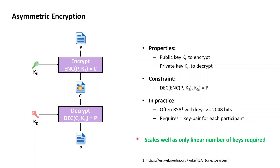The downside to asymmetric encryption schemes is that the size of the data that can be encrypted with them is very small. In fact, if RSA is used, the size of the data that can be encrypted is just about the size of the key involved. So if RSA keys of length 2048 bits are used, the data can be at most just about 2048 bits as well, which is obviously not practically usable.